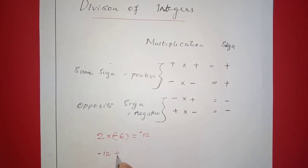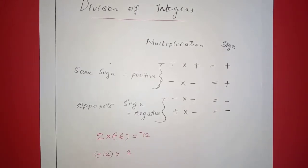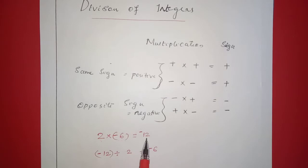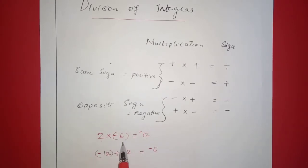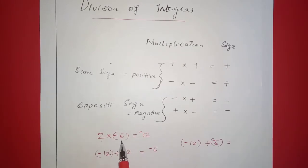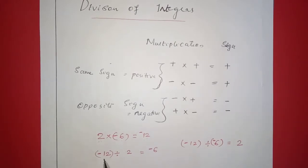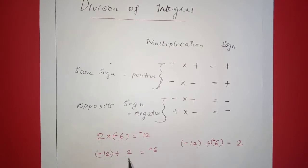2 divided by negative 2. We will choose negative 6. Negative 6 equals negative 2. We will choose negative 2 divided by negative 6. That's why we get the answer: negative 12 and negative 6.